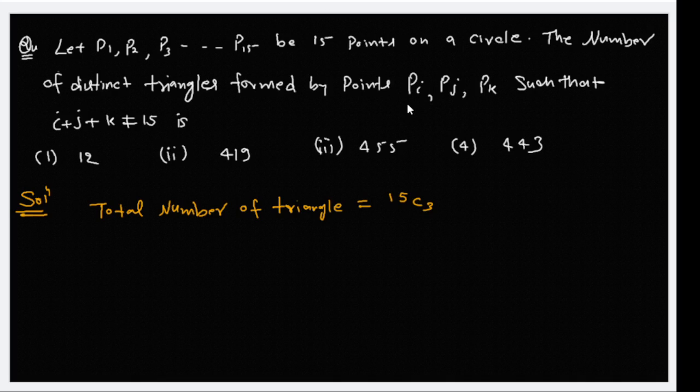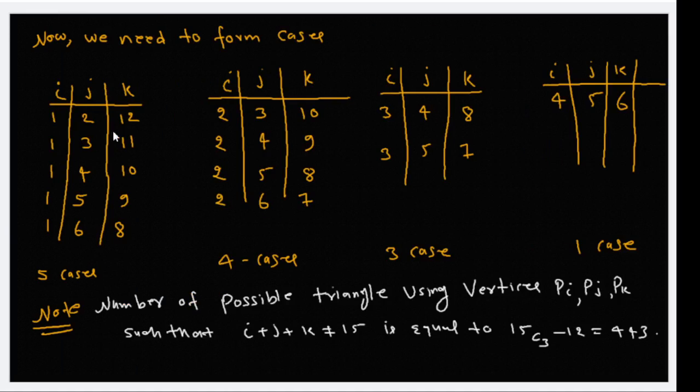Where pi, pj, pk are the points of vertices of a triangle. We form some cases: five cases when I fix i and vary j and k, and the sum is 15. Similarly, if we fix i equal to 2, then we have four cases. If we fix i equal to 3, we have three cases. If I fix i equal to 4, then we have only one case. So the total number of cases is 12.